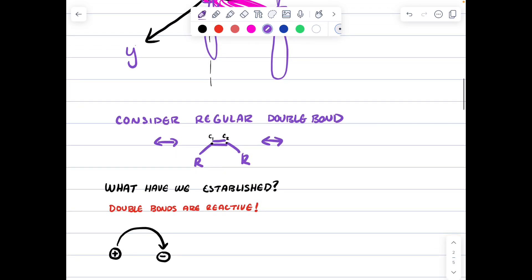So what have we established? We have established that pi bonds are reactive. So let's do a simple resonance example with a pi bond just to show that pi bonds are weak and how they can move.